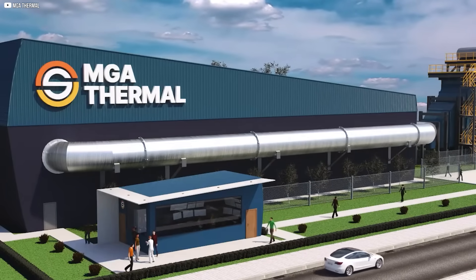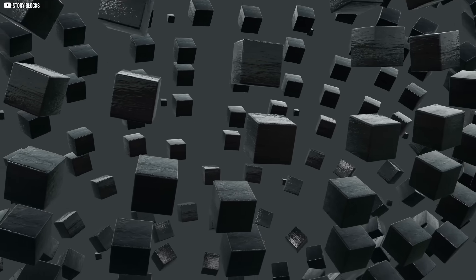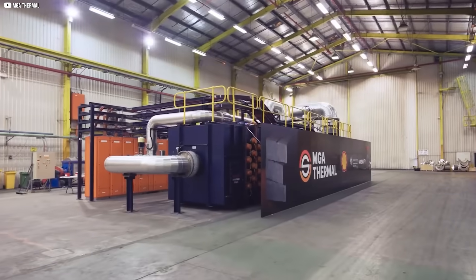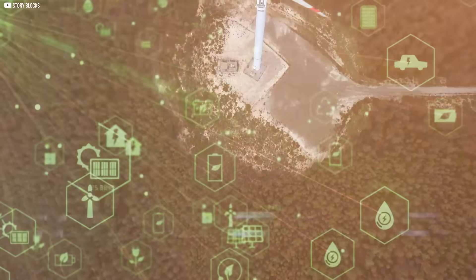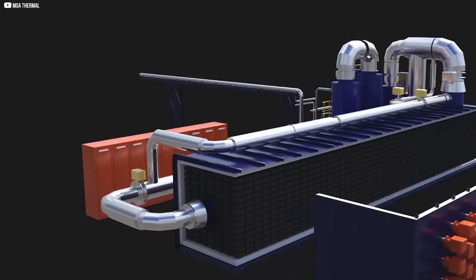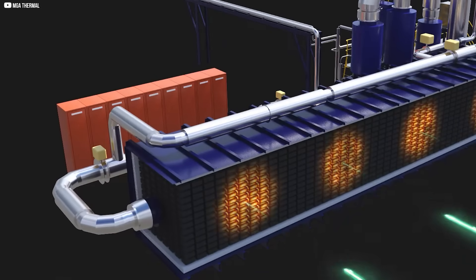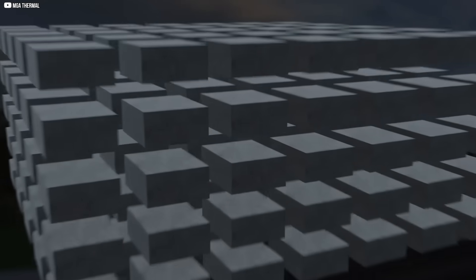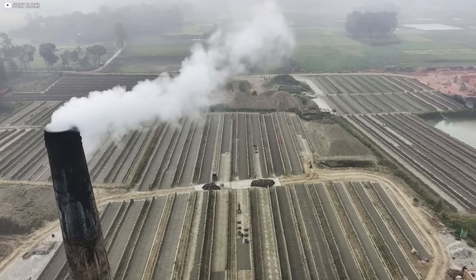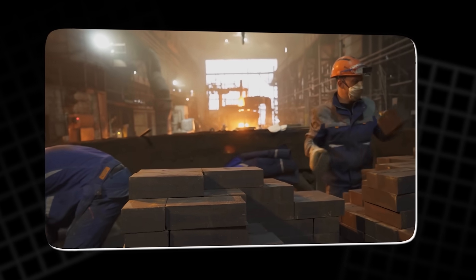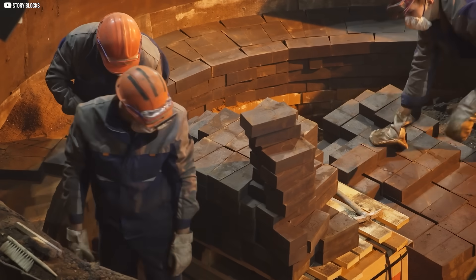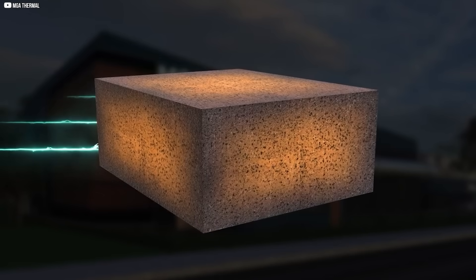The weight of reality. Limits and friction. Every breakthrough casts a shadow. And for MGA Thermal, that shadow is reality. The technology is promising, but scaling it is something else entirely. Right now, their brick production relies on a single kiln, turning out around 100 blocks per day. That's fine for a pilot plant, but a commercial-scale facility would require tens of thousands. The infrastructure to build that many simply doesn't exist yet. It would have to be created by them.